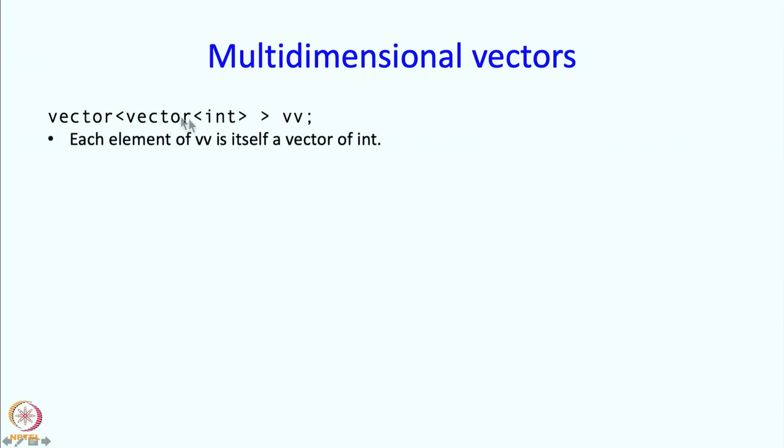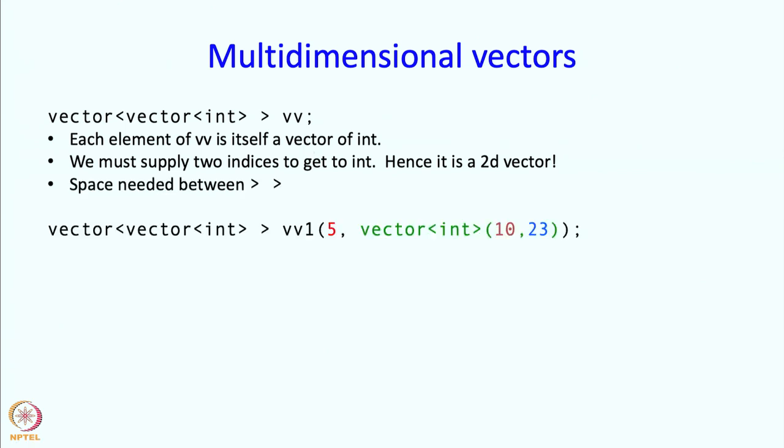What does this nominally say? It says that each element of VV will itself be a vector of integers, because what you put over here is supposed to tell you the type of the elements of this vector. So each element over here will be a vector of integers. That means to get to the integer itself, we must supply two indices. So VV of 0 will get me to a vector of integers. If I add another index, I will get to the actual integer. So we really have a two-dimensional vector over here.